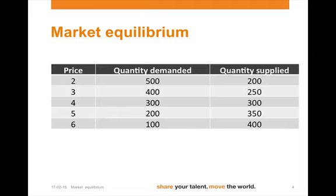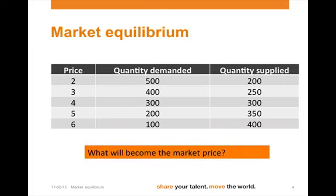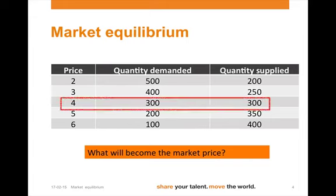Let's have a look at the table. At a price of 2, quantity demanded is 500, whereas quantity supplied is 200. As price increases, the law of demand tells us that quantity demanded falls, whereas quantity supplied increases. What will become the market price? The price at which quantity demanded equals quantity supplied, which will be at a price of 4.